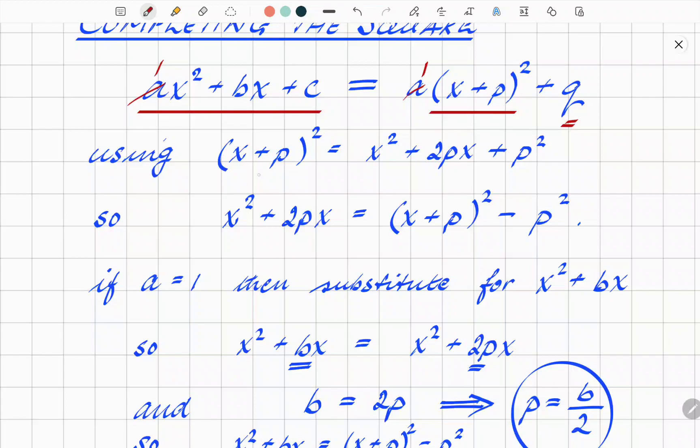Where we're starting is that if we take any standard binomial term, (x + p), and square it, we end up with x² + 2px + p². But if you rearrange that, you find that x² + 2px is (x + p)² minus p².